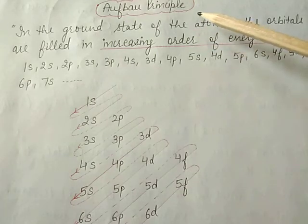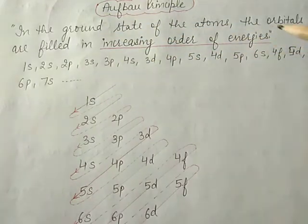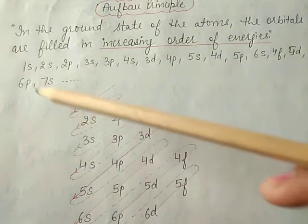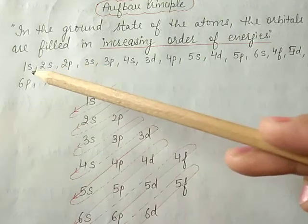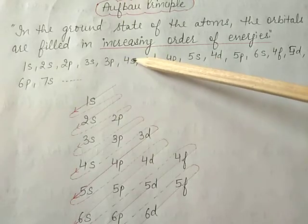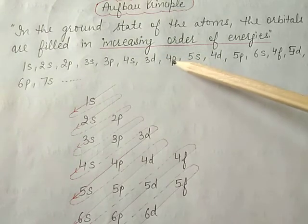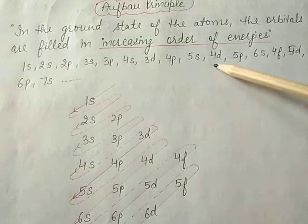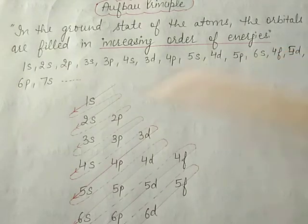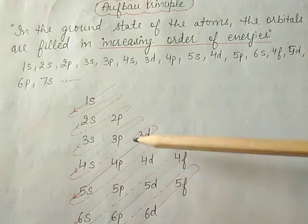The Aufbau principle states that in the ground state of an atom, the orbitals are filled in the increasing order of their energy, in this sequence: 1s, 2s, 2p, 3s, 3p, 4s, 3d — because 4s has lower energy compared to 3d according to the n+l rule — then 4p, 5s, 4d, 5p, 6s, 4f, 5d, 6p, 7s, and so on. This is done according to the arrow table.